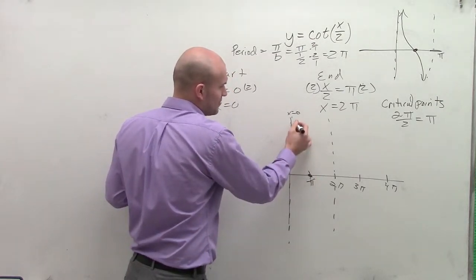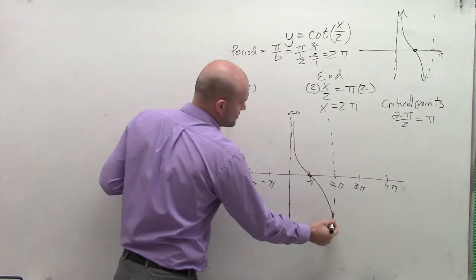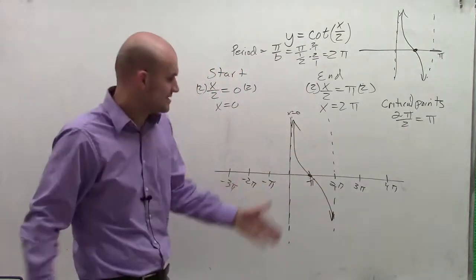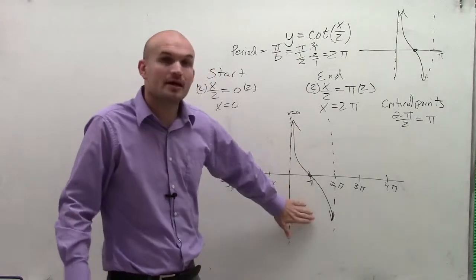Therefore, now by approaching both my asymptotes, I'm just going to estimate the curve of the graph. I'm not going to get exact, but I'm just going to estimate the curve of the graph in this direction.